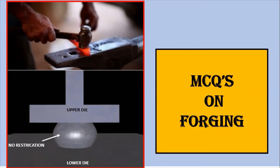Hello friends. Today we'll discuss MCQs on forging, covering topics like drop forging, press forging, upset forging, open and closed die forging, and forging operations. These will be discussed through the video as well as with reference to some diagrams. Let's begin with the first MCQ.